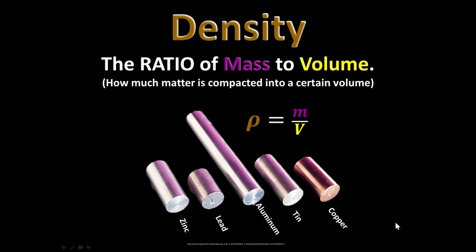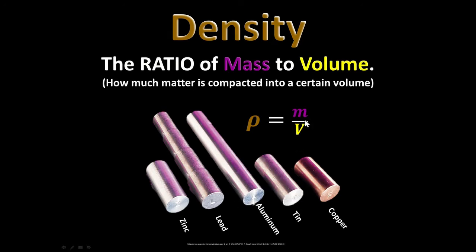Here are little samples of material: zinc, lead, aluminum, tin, and copper. All are manufactured to have the same mass but different volumes. Because they have the same diameter, volume is directly proportional to length. If we look at lead, it takes about four pieces of lead to make about the same volume as one piece of aluminum. So the volume of aluminum is about four times the volume of lead, meaning the density of aluminum is about one-fourth the density of lead. The density of aluminum is about 2,700 kilograms per cubic meter, and the density of lead is about 11,300 kilograms per cubic meter.